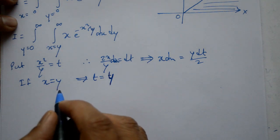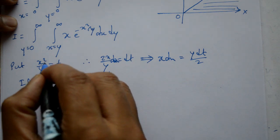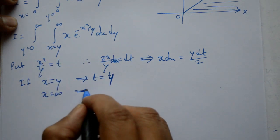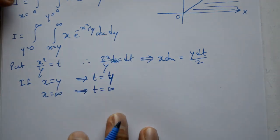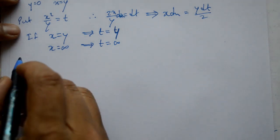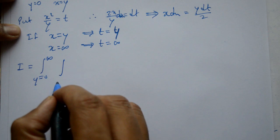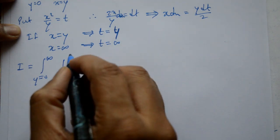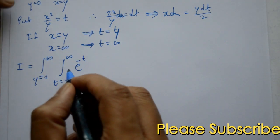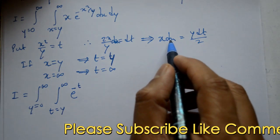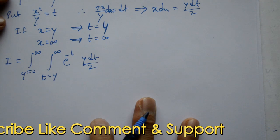If x = infinity, then t = infinity by y = infinity. So t goes from y to infinity. Now substitute karna hai: I = integration of y = 0 to infinity, integration of t = y to infinity, e raised to minus t, and x dx = y dt by 2.